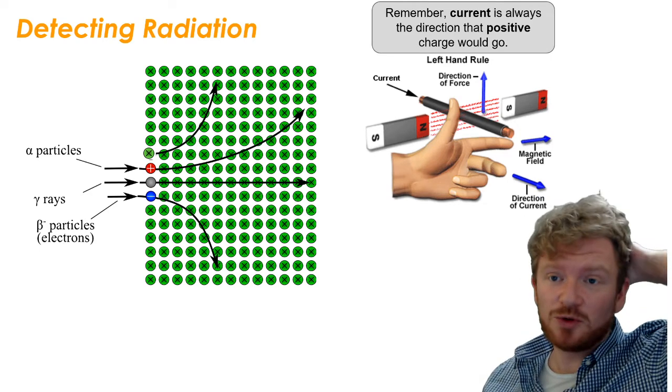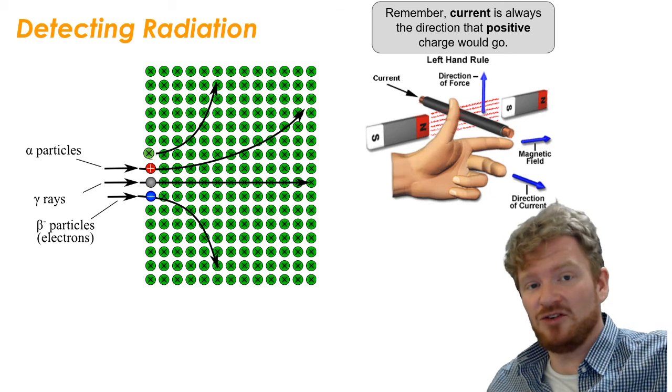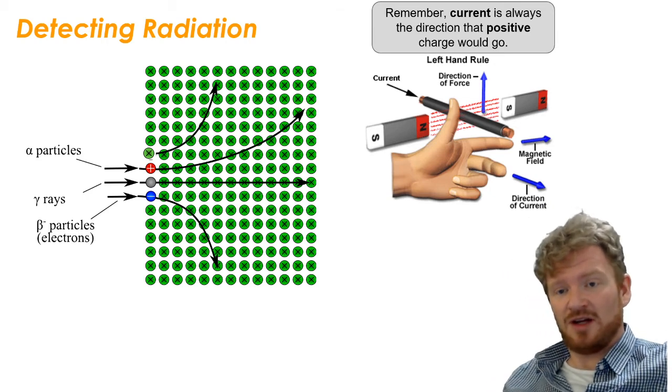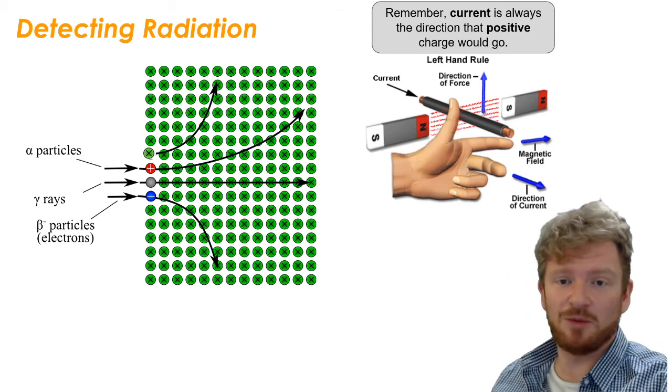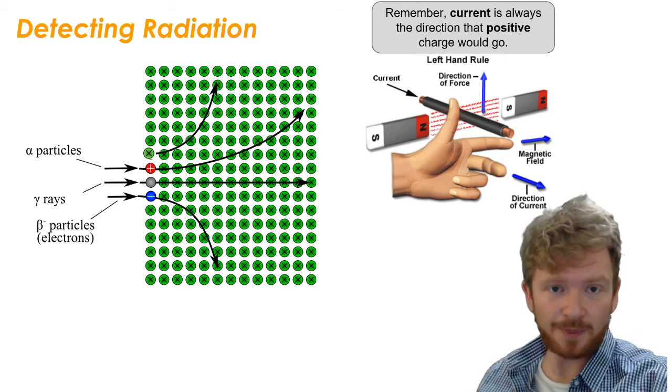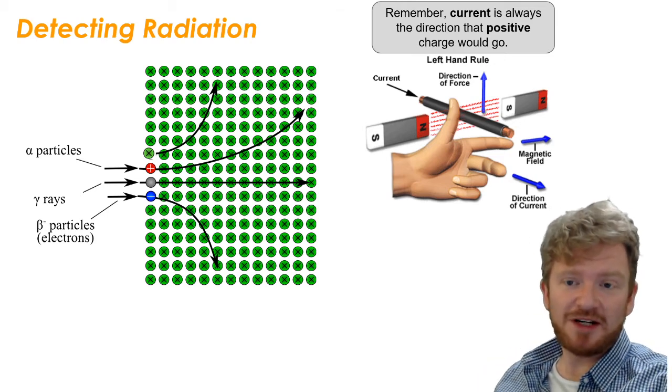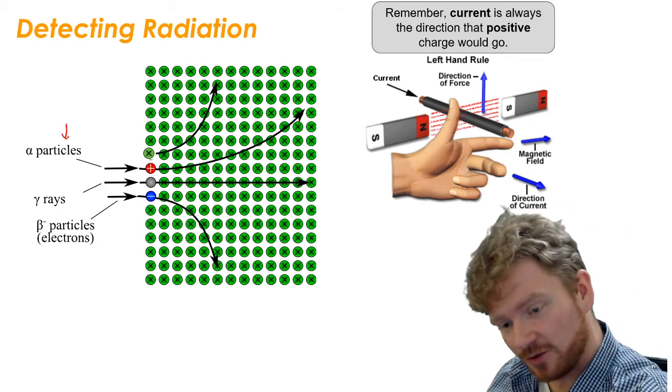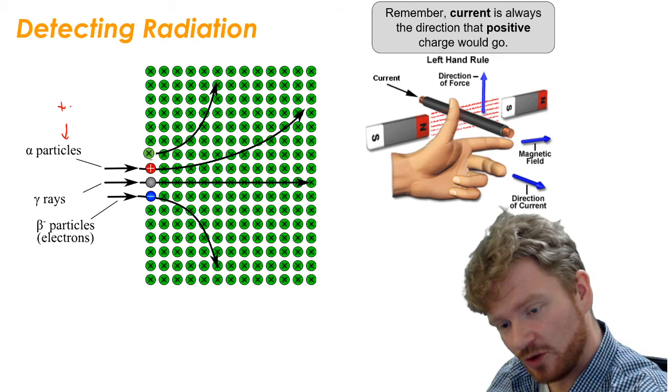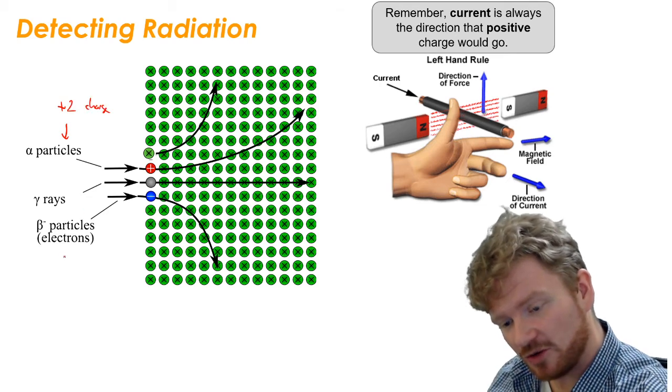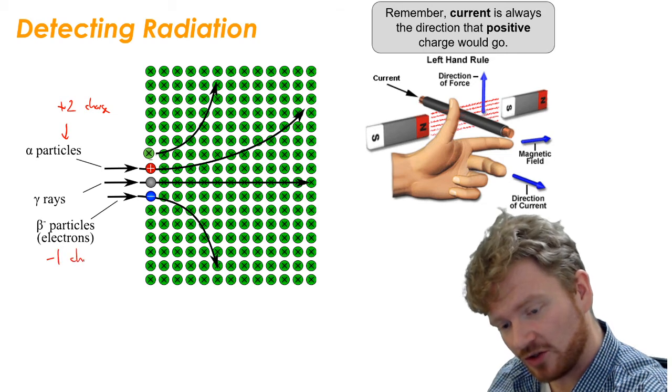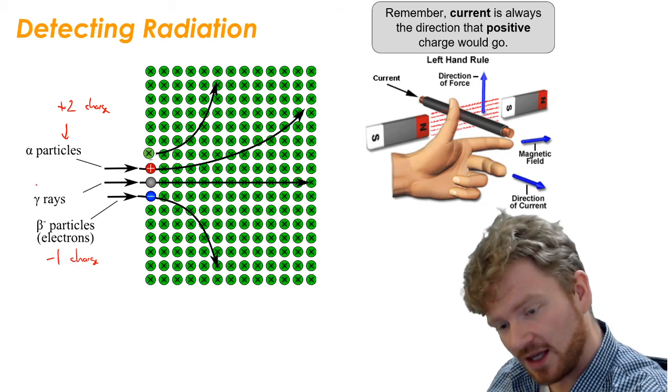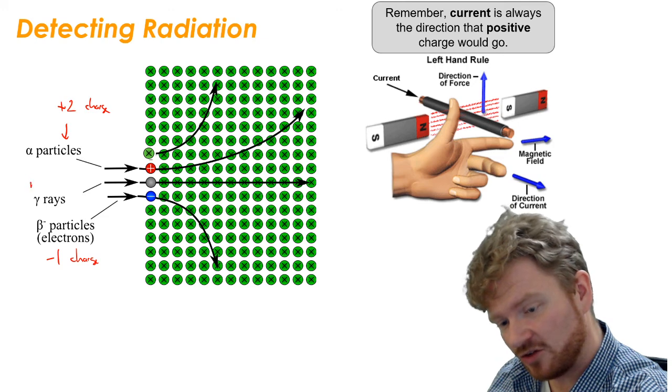Quickly, I want to talk about detecting radiation. This is nothing that you haven't done before, but it'll help to sum up stuff we've done so far. If you remember, radiation is alpha, beta, gamma. Alpha particles have a plus two charge. Beta minus particles are electrons, so they have a minus one charge. And gamma rays are electromagnetic rays, so they are neutral.